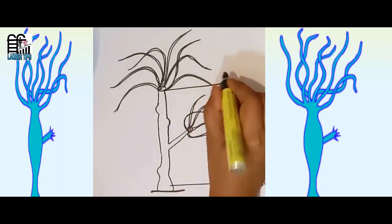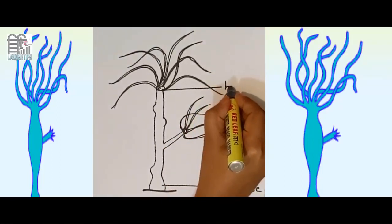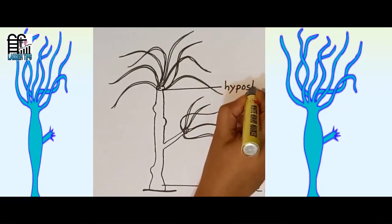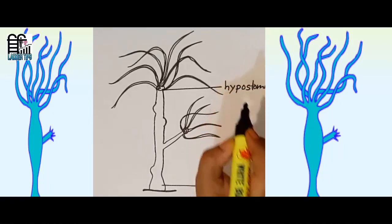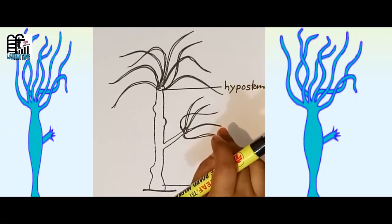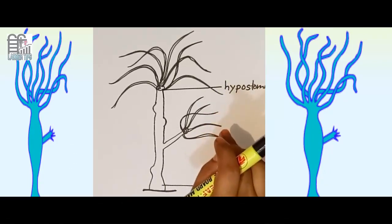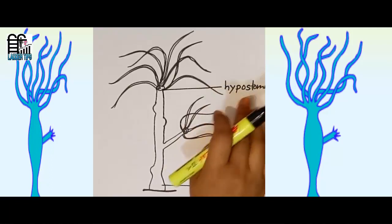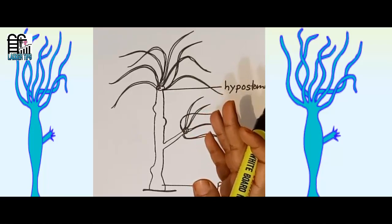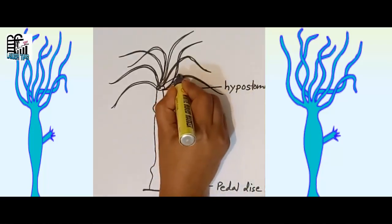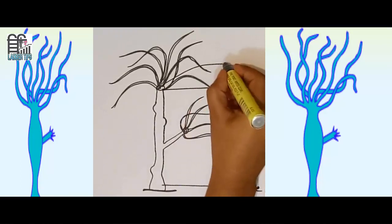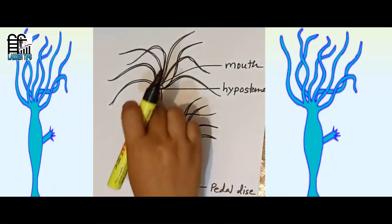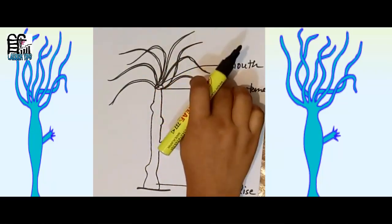Hypostome: actually the free distal end or oral end of the body bears a conical elevation called hypostome. It bears an aperture at its apex called mouth. That is mouth. The apex of hypostome is called mouth of Hydra.